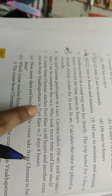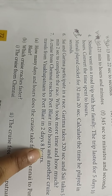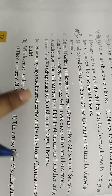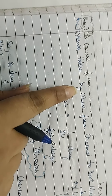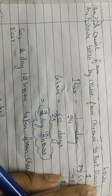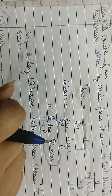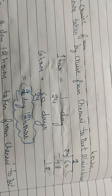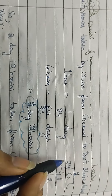Question seven: a cruise from Chennai reaches Port Blair in 60 hours, and another cruise travels from Vishakhapatnam to Port Blair in two days and eight hours. We need to find how many days and hours the Chennai cruise takes. We convert 60 hours into days: one hour equals one upon 24 days, so 60 hours equals 60 divided by 24 days.